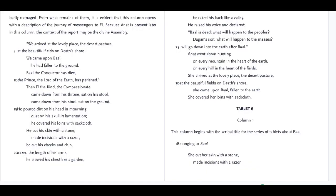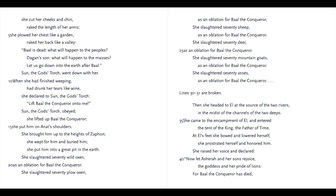We arrive at the lovely place, at the beautiful fields at death's shore. We came upon Baal. He has fallen to the ground. Baal the Conqueror has died. The prince, the lord of the earth, has perished. Lift Baal the Conqueror onto me. She lifted up Baal the Conqueror, put him on her shoulders, brought him up to the heights of Zaphon. She wept for him and buried him. She put him in a great pit in the earth. She slaughtered sixty wild oxen, seventy bulls, seventy sheep, seventy deer, seventy mountain goats, and seventy donkeys as an oblation for Baal the Conqueror.